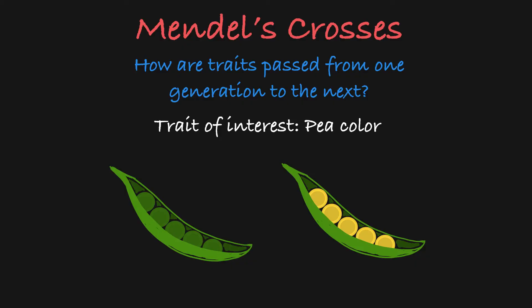He noticed that there were two variations in pea color: plants that produced green peas and plants that produced yellow peas. To learn about how pea color was inherited, he set up a series of crosses where he mated pea plants together and observed the pea color in their offspring.